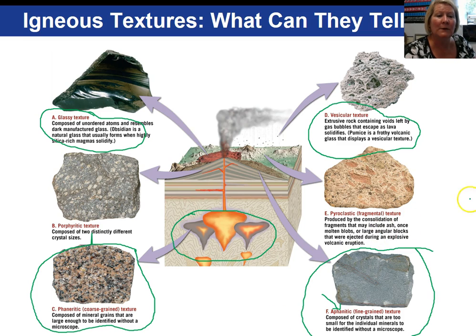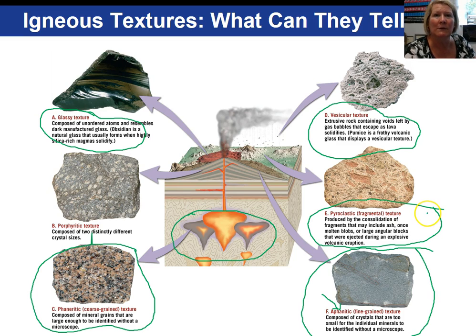We have a couple more textures. Pyroclastic — 'pyro' means fire, and 'clast' means pieces. These are pieces of rock that get violently blown out of a volcano. These are the most dangerous types of volcanic eruptions — those with pyroclastic materials. Once the pyroclastic materials such as ash and lapilli land on the earth, they can be glued together in what we call a welded tuff.